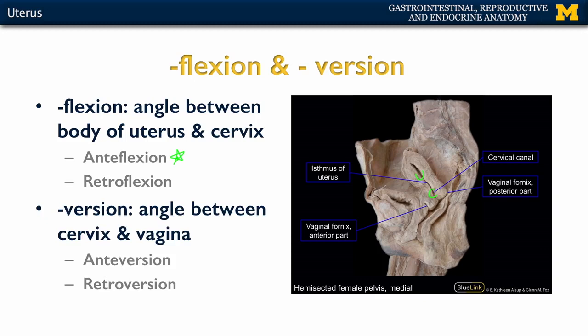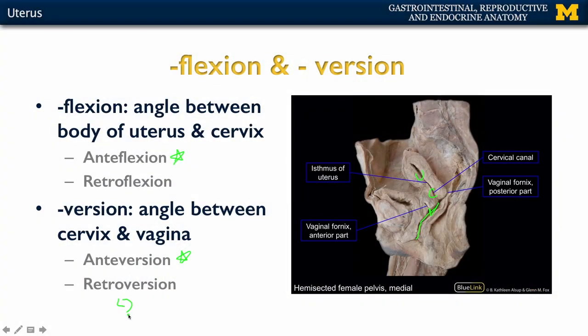Then you'll hear the terms anteversion and retroversion, which are different from the flexions we just discussed. Here we're focused on the angle between the cervix and the vagina. Anteversion means the cervix is more anteriorly placed, and this is the more typical presentation. Retroversion means a more posterior tilt. An anteflexed, anteverted uterus is the most typical presentation. If there's a retroflexion or retroversion, it's not necessarily symptomatic or troublesome, though sometimes you can have a prolapse associated with retroversion.